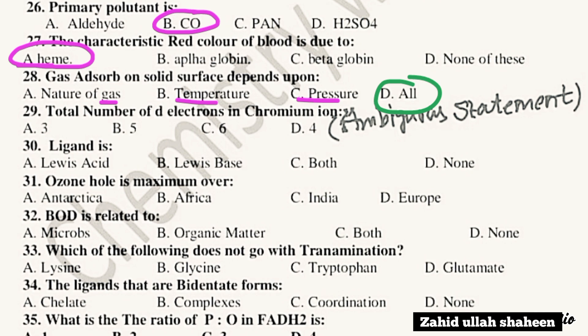Question 28: The total number of electrons in the chromium ion — take option, number 8.